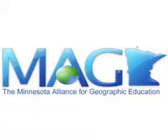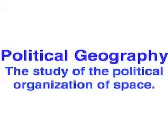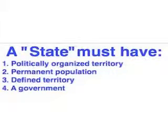Simply stated, political geography is the study of the political organization of space. Like other areas of human geography, it contains many critical definitions. A state is defined as a politically organized territory with a permanent population, defined territory, and a government. Political geographers use the term state to refer to countries. The U.S. Department of State recognizes 195 independent states in the world.